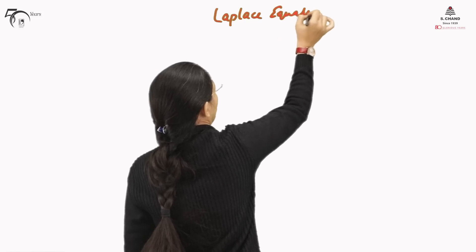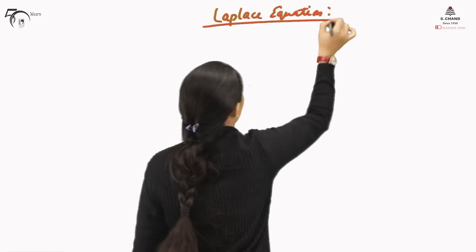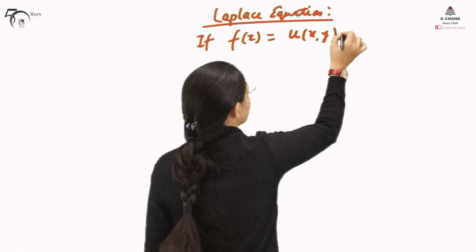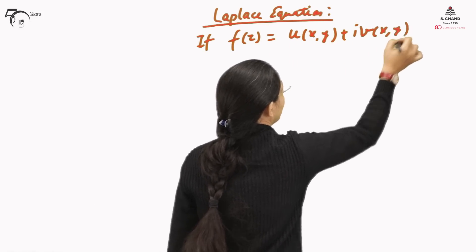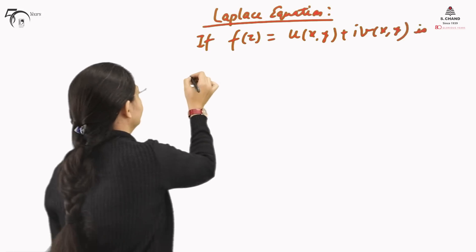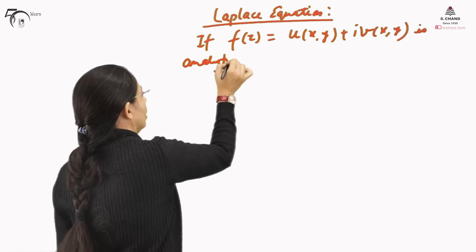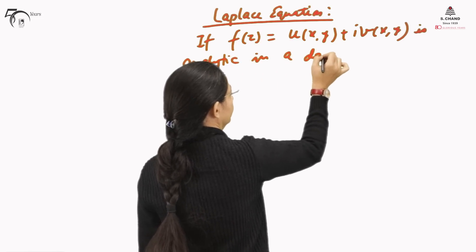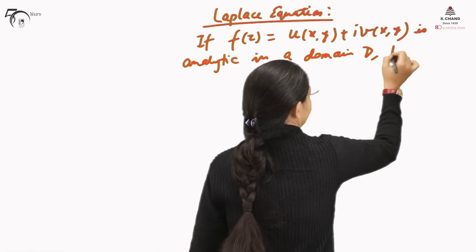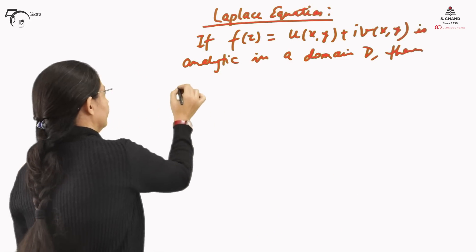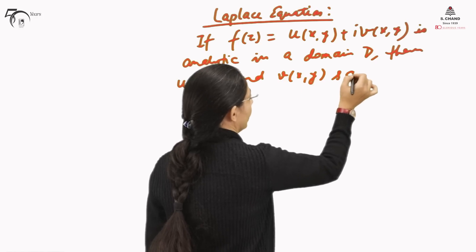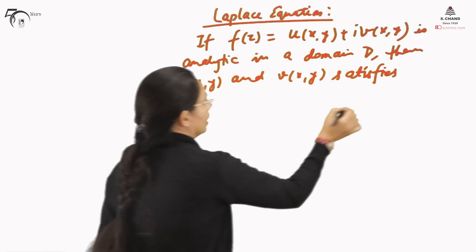So the Laplace equation for a complex variable — for a complex function — if F(Z) is equal to U(x,y) + i·V(x,y), that is written in terms of real and imaginary parts, and is analytic in a domain D, then U(x,y) and V(x,y) satisfy the Laplace equation.